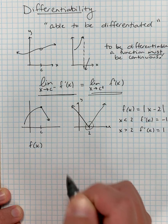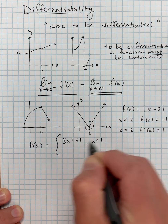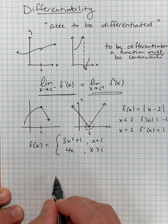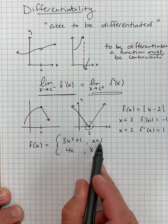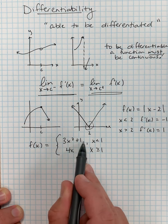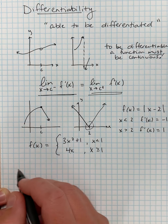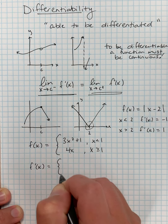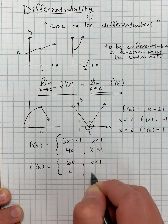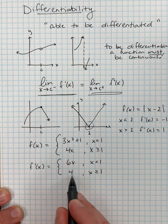Where can this get a little confusing? Consider a piecewise function: 3x squared plus 1 when x is less than 1, and 4x when x is greater than or equal to 1. This function looks continuous — substituting x equals 1 gives 3 times 1 plus 1, which is 4 on the left, and 4 on the right as well. So it is a continuous piecewise function. However, if I consider f prime of x, from the left I get 6x for x less than 1, and from the right I get 4 for x greater than or equal to 1. So the derivative from the left at x equals 1 is 6, and the derivative from the right is 4.